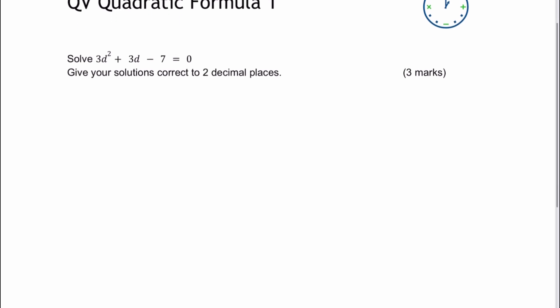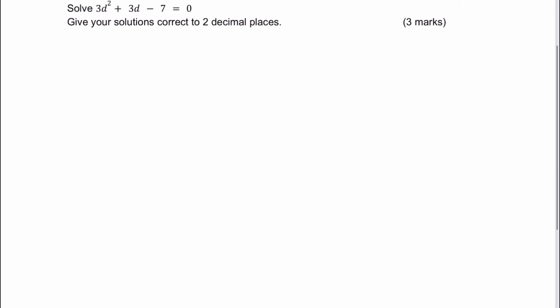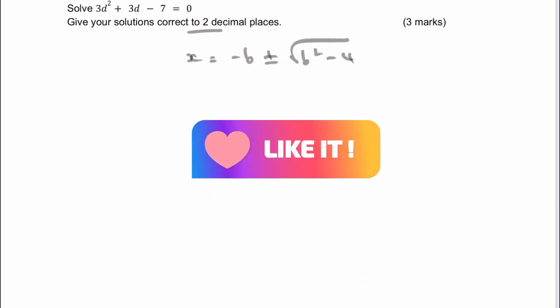Now it is a quadratic formula question, and the way that we know that is it says give your solutions, and importantly it says correct to two decimal places. So what we're looking for is to apply the formula x equals minus b plus or minus the square root of b squared minus 4ac all over 2a. Now you might find that in the front of your exam paper, or it's something that you might need to learn.